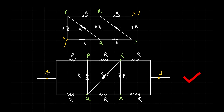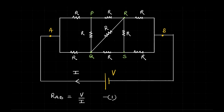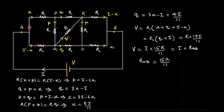I will quickly show the solution using the symmetry argument, then go rigorously using Kirchhoff's law. To find equivalent resistance between A and B, I put a battery of voltage V sending current I, so R_equivalent = R_AB = V/I. At node A the current I splits: one branch carries current x and the other carries I minus x. By symmetry, the corresponding branches on the other side also carry p and q respectively, and I assume a current z in the middle branch.